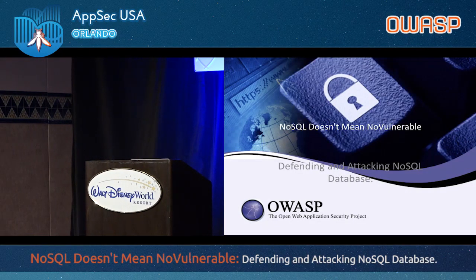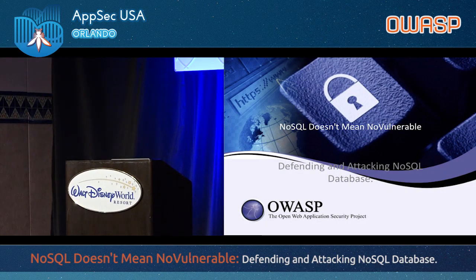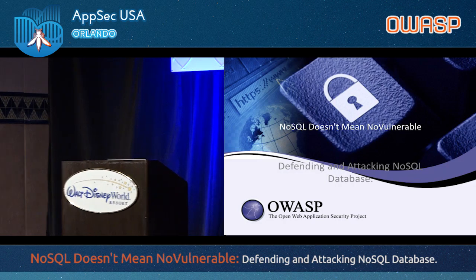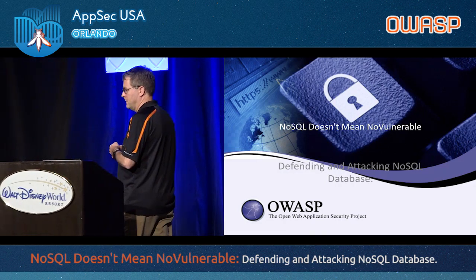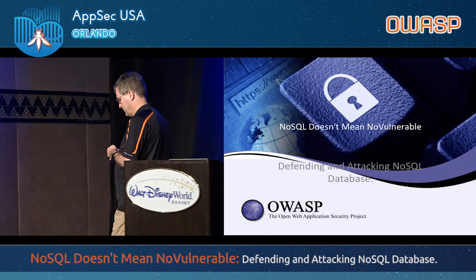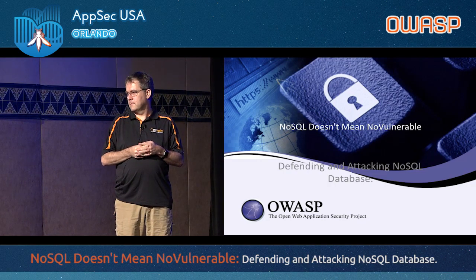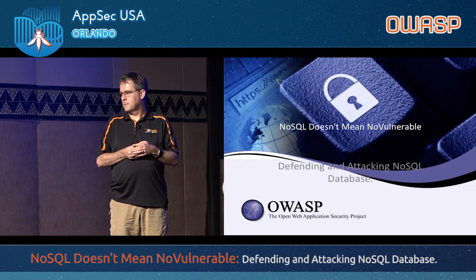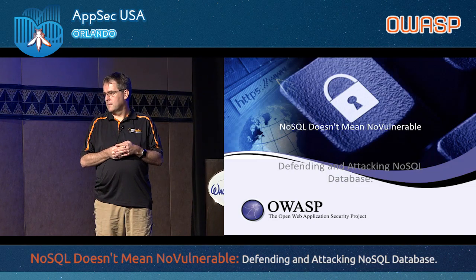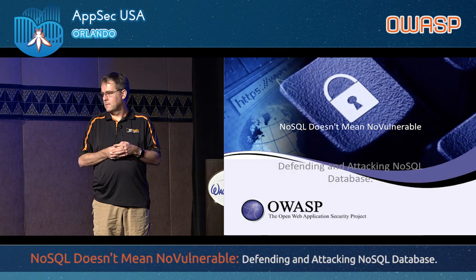Our next speaker is the Dean of Research with SANS, a senior instructor who directs the Internet Storm Center. He founded DSHIELD, which is now part of Internet Storm Center. He has a podcast, a blog, and numerous publications. He's been honored by SC Magazine and Network World Magazine. He's an innovative, cutting-edge researcher and thought leader. I'm very pleased to welcome Johannes Ulrich.